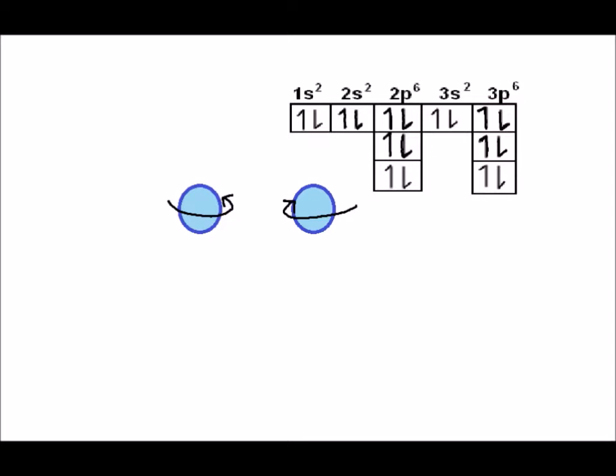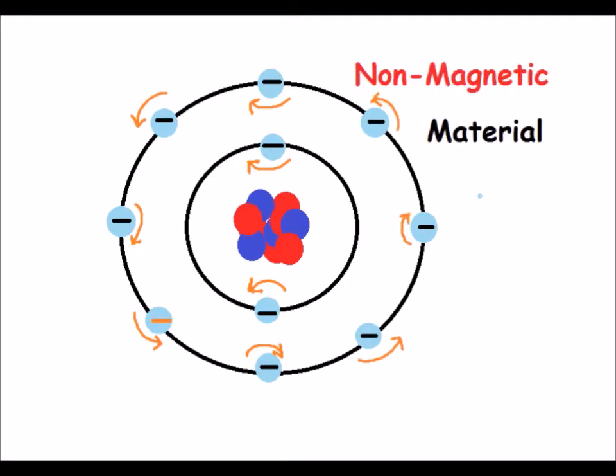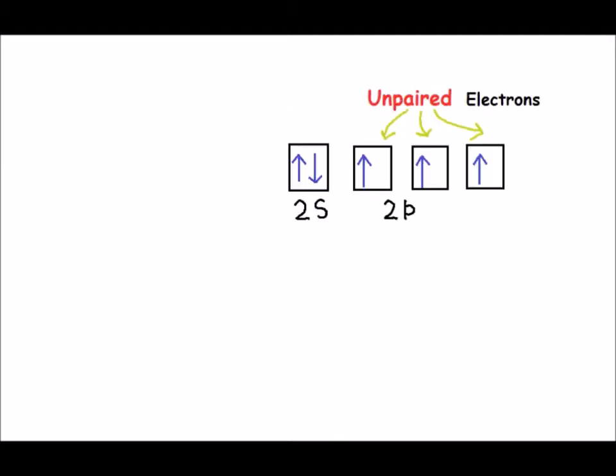Electrons spin around the nucleus in pairs but in opposite directions—one up and one down. In most atoms, electron spins in opposite directions so that the magnetism cancels out. In magnetic materials, the atoms contain unpaired electrons. This creates a magnetic moment.